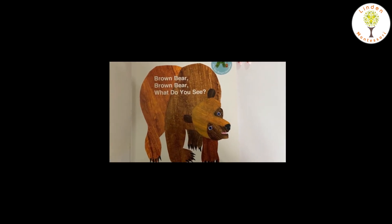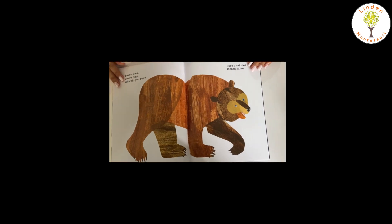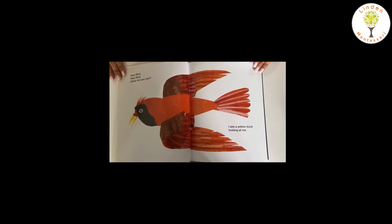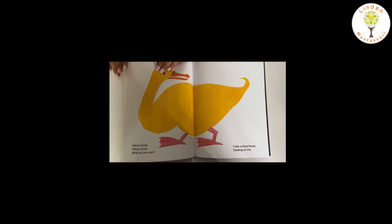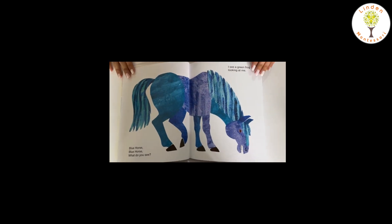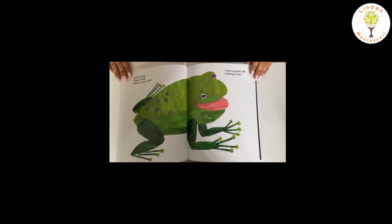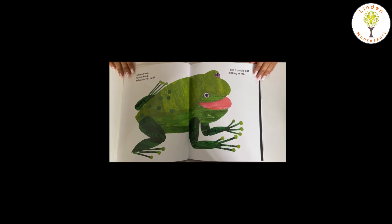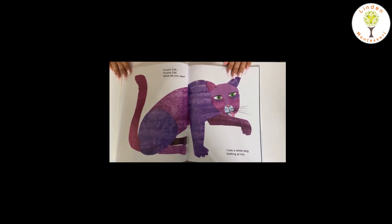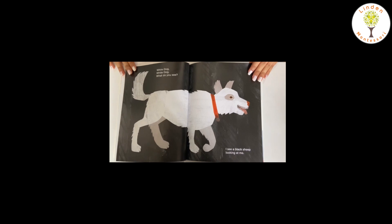Stories also follow a sequence. Now we will read a story: Brown Bear, Brown Bear, what do you see? I see a red bird looking at me. Red bird, red bird, what do you see? I see a yellow duck looking at me. Yellow duck, yellow duck, what do you see? I see a blue horse looking at me. Blue horse, blue horse, what do you see? I see a green frog looking at me. Green frog, green frog, what do you see? I see a purple cat looking at me. Purple cat, purple cat, what do you see? I see a white dog looking at me.